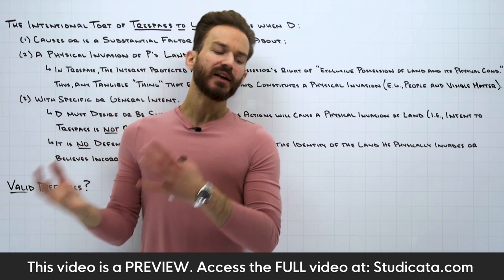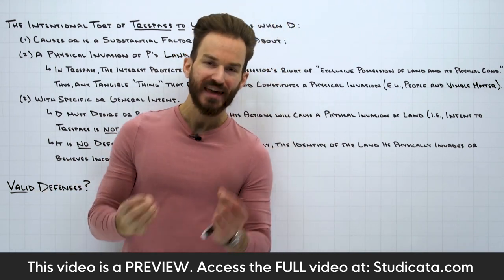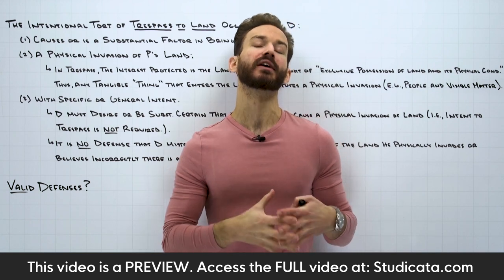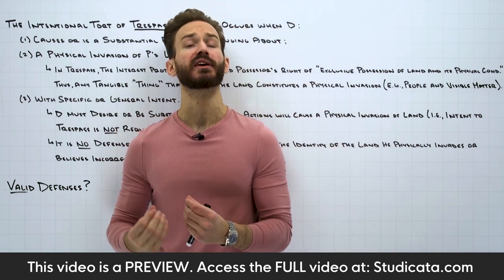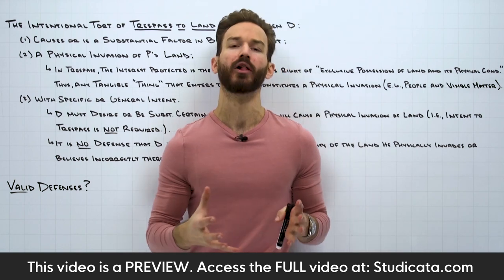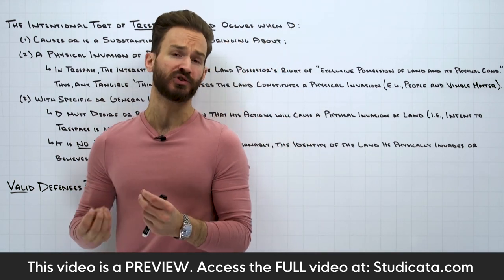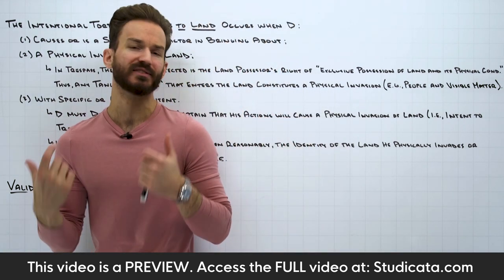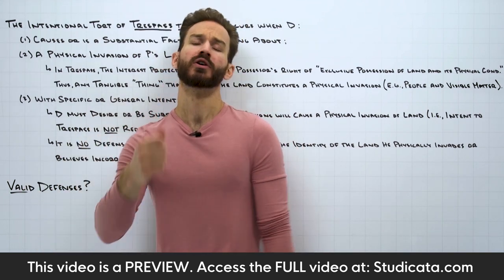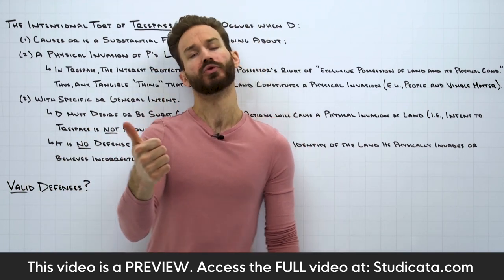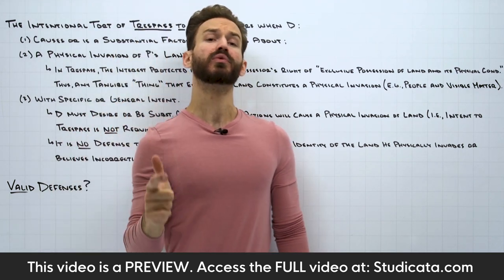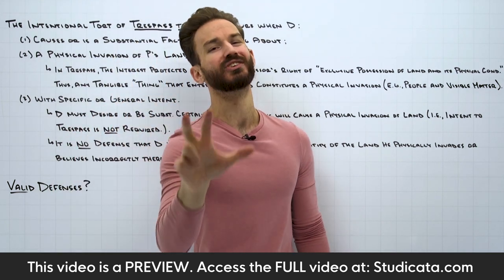If we take a step back and think about the big picture — back to our first lesson on intentional torts — when we talked about the prima facie case, the essential elements of almost all intentional torts are: number one, the voluntary act requirement by the defendant; number two, the intent requirement; and number three, the causation requirement.